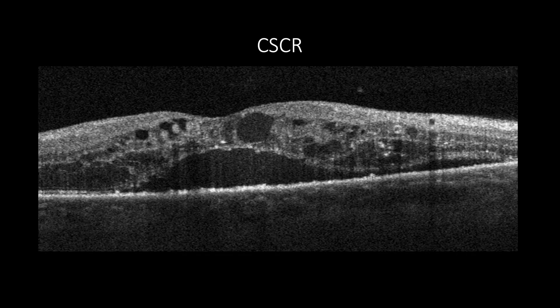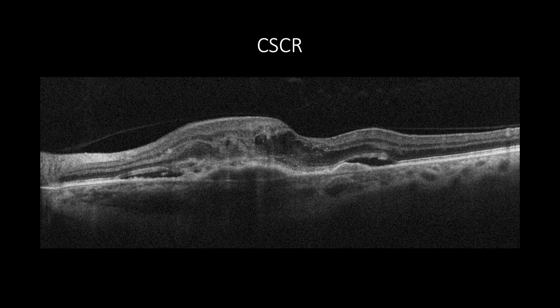In cases of CSCR, except for some chronic changes that resemble intraretinal cavitation with or without increased retinal thickness, some cases of CSCR become complicated with choroidal neovascularization, which features fibrovascular PED with subretinal and intraretinal fluids.